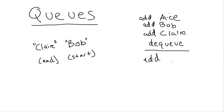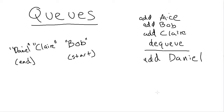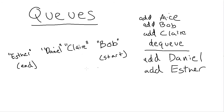Now Bob is in the start position and Claire is still at the end. Let's add someone alphabetically — Daniel — and he appears at the end, since we always add to one side. Then let's add Esther. Now it looks like: Bob at the start, then Claire, then Daniel, then Esther at the end.